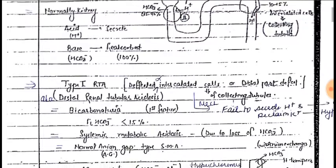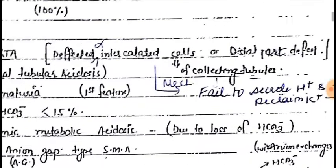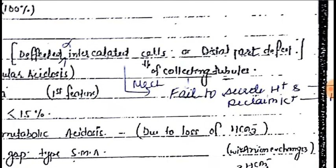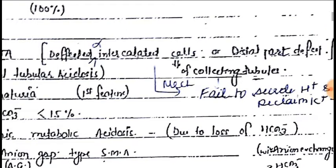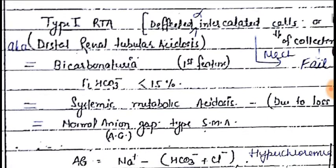In Type 1, there is a defect in the alpha intercalated cells of the collecting tubules. It is also known as distal renal tubular acidosis. The alpha intercalated cells of the collecting tubules fail to secrete the H+ ion, and fail to reclaim potassium, which leads to metabolic acidosis and hyperkalemia.